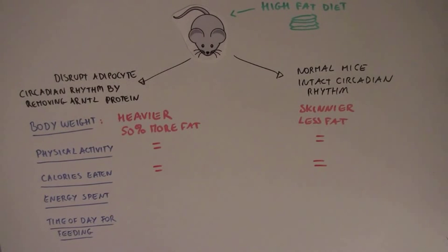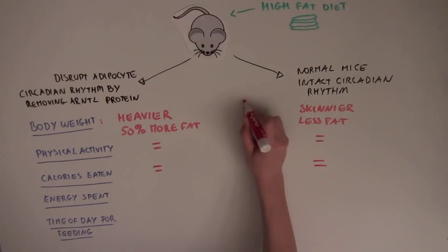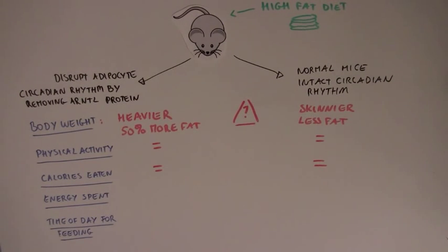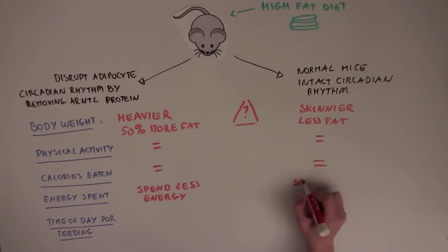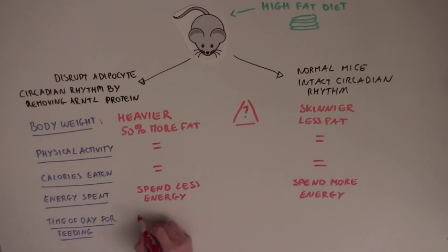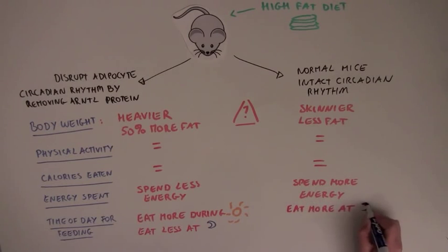So, the mice exercised just as much and ate just as much food, yet they were heavier. So, what could explain these differences? Well, it turns out that mice with a disrupted adipocyte circadian rhythm spent less energy and ate more during the day and less at night, compared to normal mice who eat more at night and less during the day.